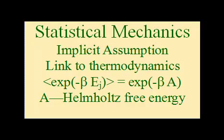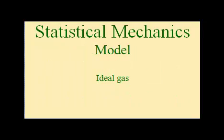There is no direct proof of this implicit assumption, but Gibbs provides in his book an extremely strong plausibility argument for it. These assumptions become much more clear after you've worked an example or two. Traditionally, the first example worked is the ideal gas, and that's exactly the example that will be worked in later chapters.